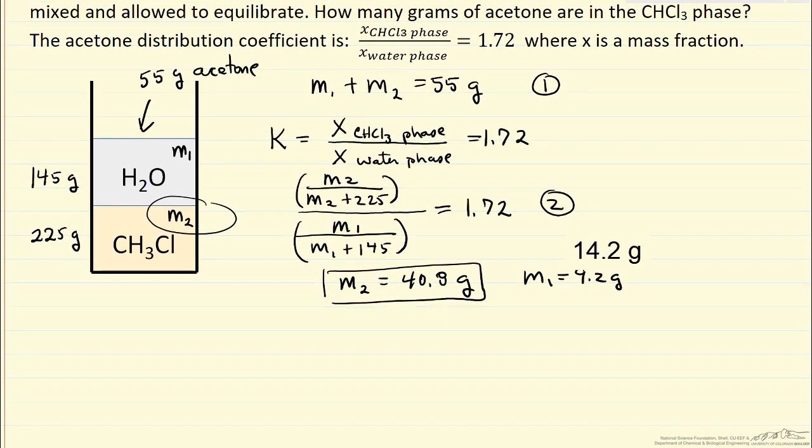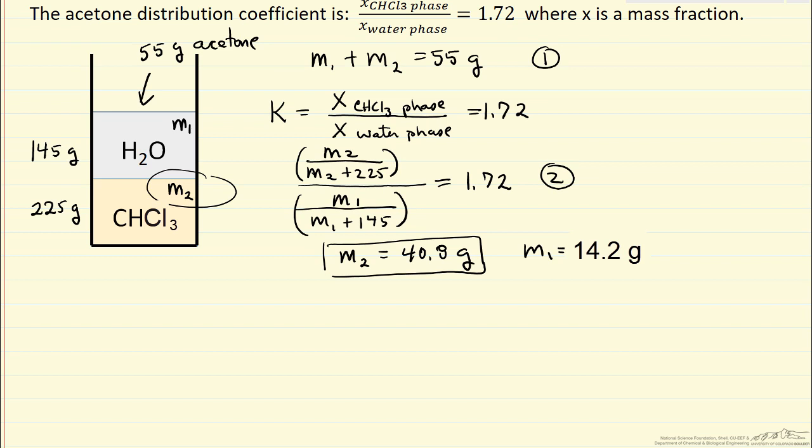Now, you don't need to look at the detailed calculations, but if you're interested, let's write down what these equations look like if we multiply out equation number two. So 1.72 times M1, M1 plus 145 is in the denominator, and then M2 on the other side. Now I can multiply this through.